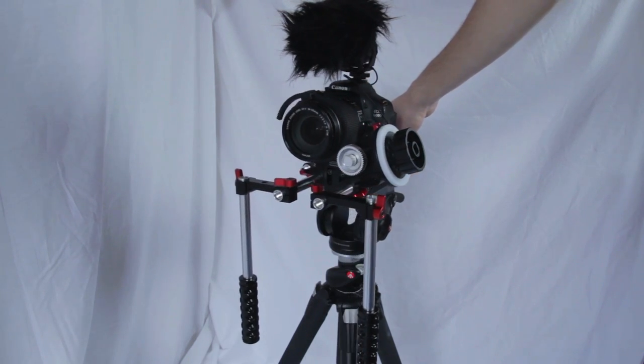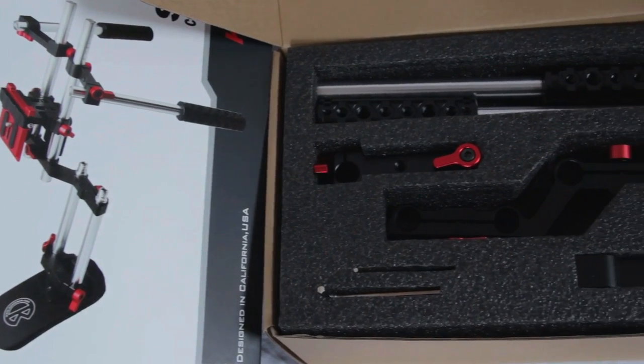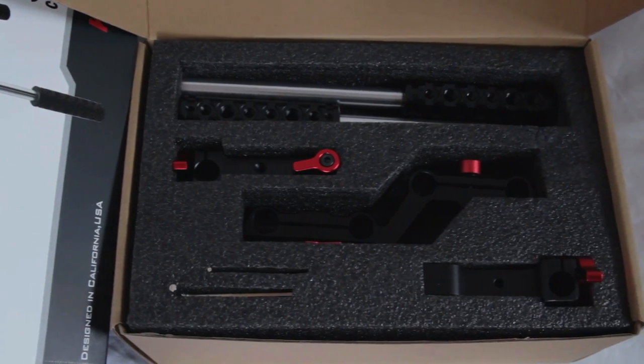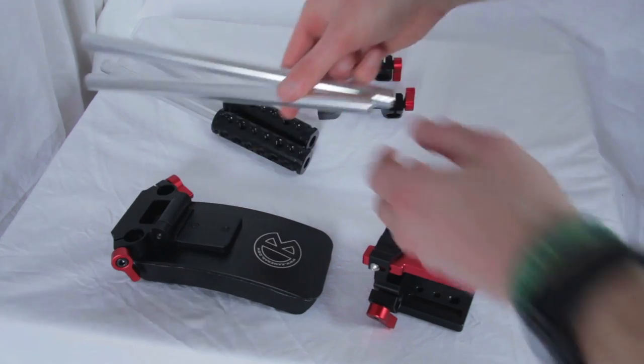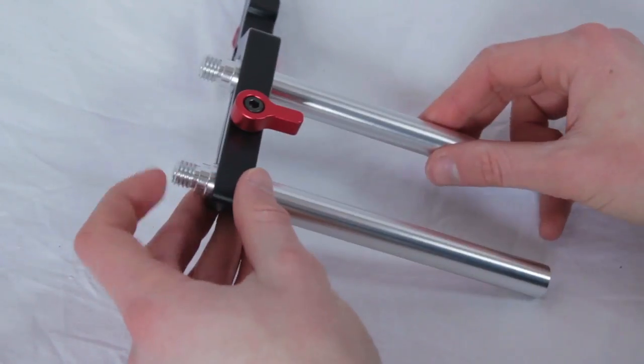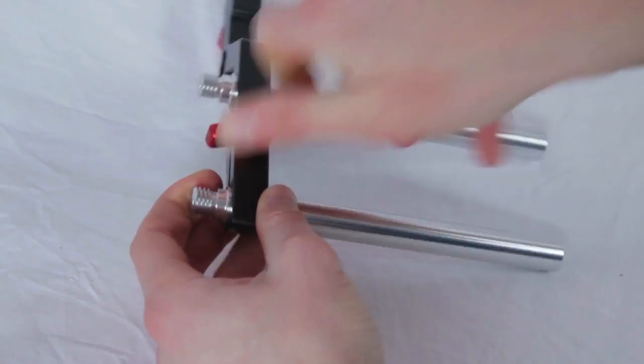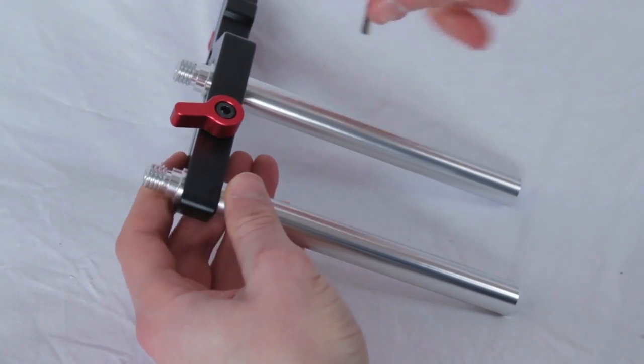The shoulder rig comes in this box, everything is packed nicely. There is just a very small and not detailed manual, but it's so simple that you don't need it anyway. You simply put the different parts together, first close the knobs with your fingers as much as you can, and then use the tool to make it firm.